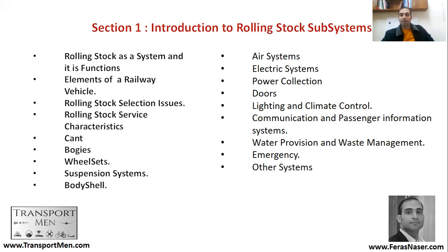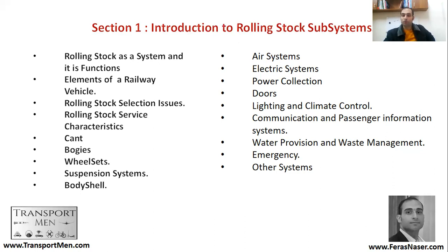We'll cover bogies — the metal body that connects the two axles together and ensures suspension forces are transmitted correctly. Wheel sets — the wheels themselves. Suspension systems: the springs, dampers, and active suspension system. Body shell and body materials. Air systems such as brakes. Electric systems, power electronics, and how different electrical systems are added to the vehicle. Power collection, doors, lighting and climate control, communication and passenger information systems, water provision and waste management — toilets are important, as is the water for them. Emergency and other systems.